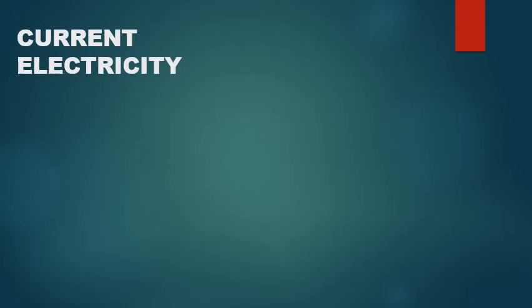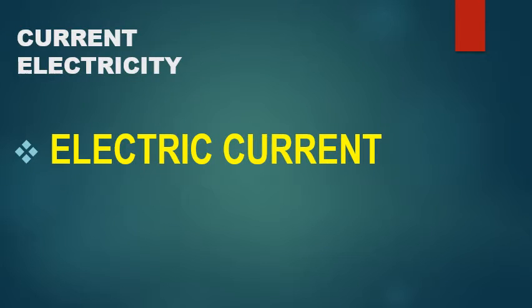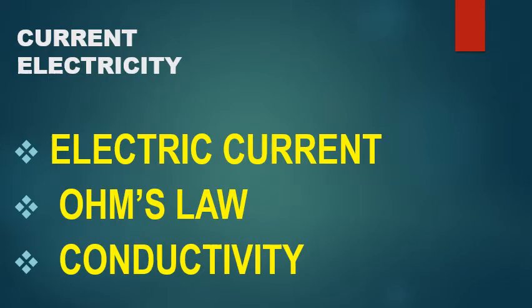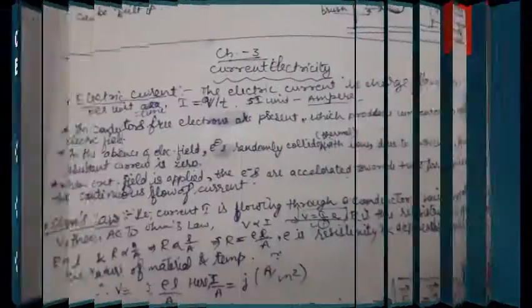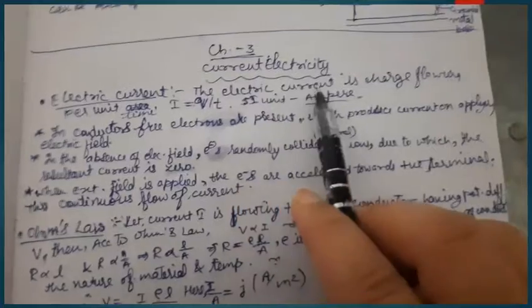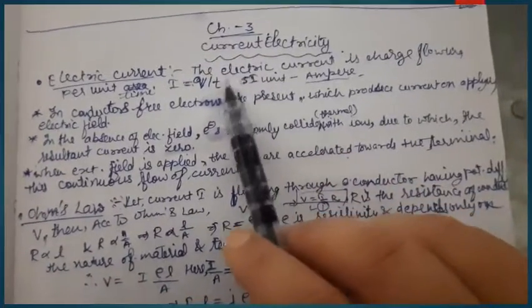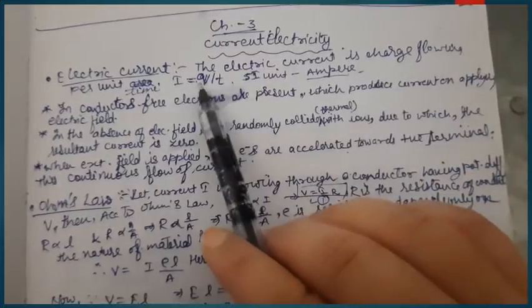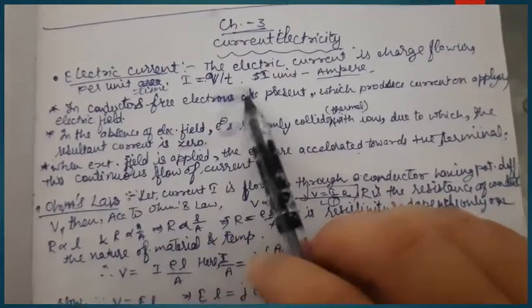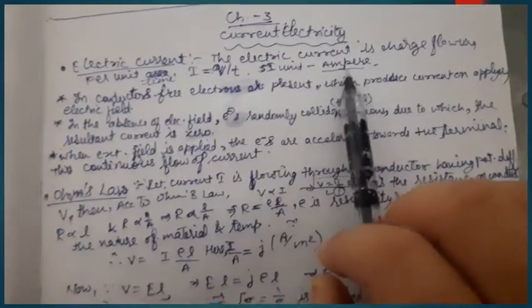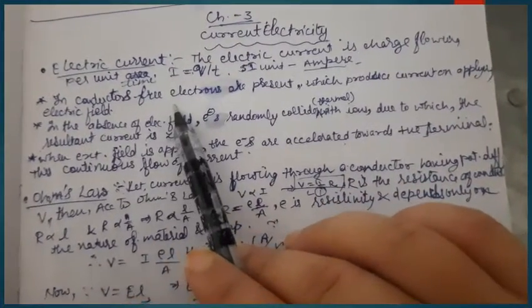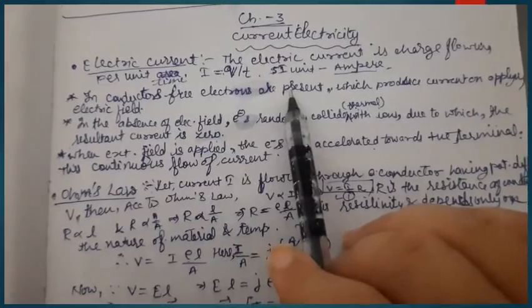Chapter 3: Current Electricity. Topics covered include electric current, Ohm's law, and conductivity. Electric current is the rate of flow of charge, or the amount of charge per unit time. Its SI unit is ampere. Conductors have the property that they conduct electricity well.